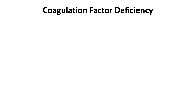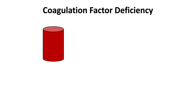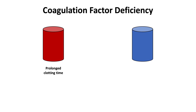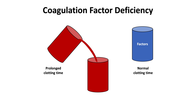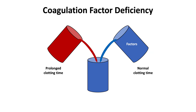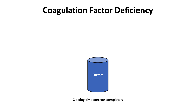When there is a coagulation factor deficiency, the patient's plasma has the prolonged clotting time. The control plasma, with the normal clotting time, has all the factors needed for clotting. In the one-to-one mix, the patient contributes deficient plasma, while the control plasma contributes enough factors to overcome the deficiency. Thus, the clotting time corrects completely.